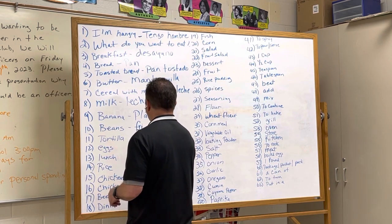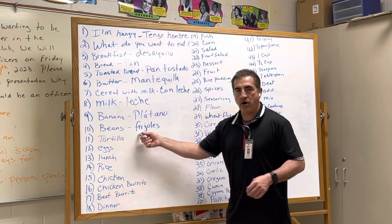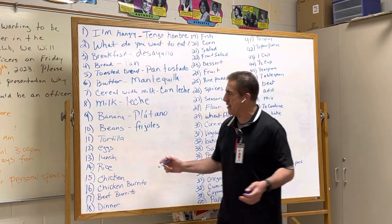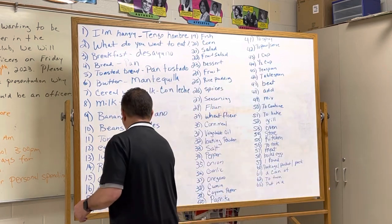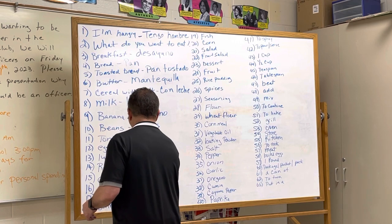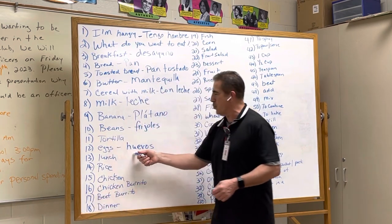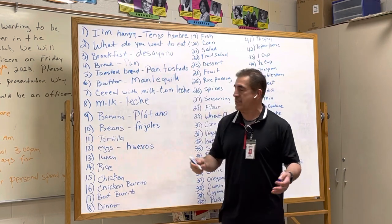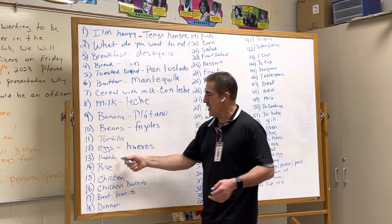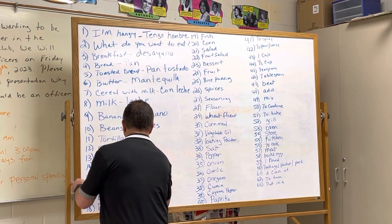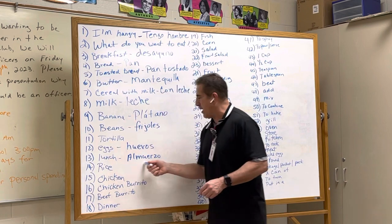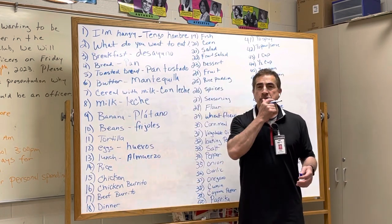Frijoles: F-R-I-J-O-L-E-S, frijoles. Tortilla is tortilla. The correct word for eggs is huevos — remember that the H is silent. Lunch is almuerzo.